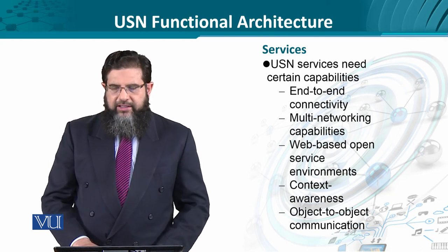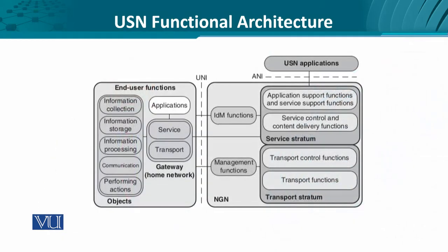We also have context awareness and object-to-object interaction. Looking at the overall functional architecture, we can broadly categorize it as end-user functions or network functions. Most of the responsibility of network functionality is handled by NGN. It has a well-defined mechanism for identification handled through identity management functions, then purely network management functions. Services are offered through the service stratum, which manages and controls services, and then we have the transport stratum.